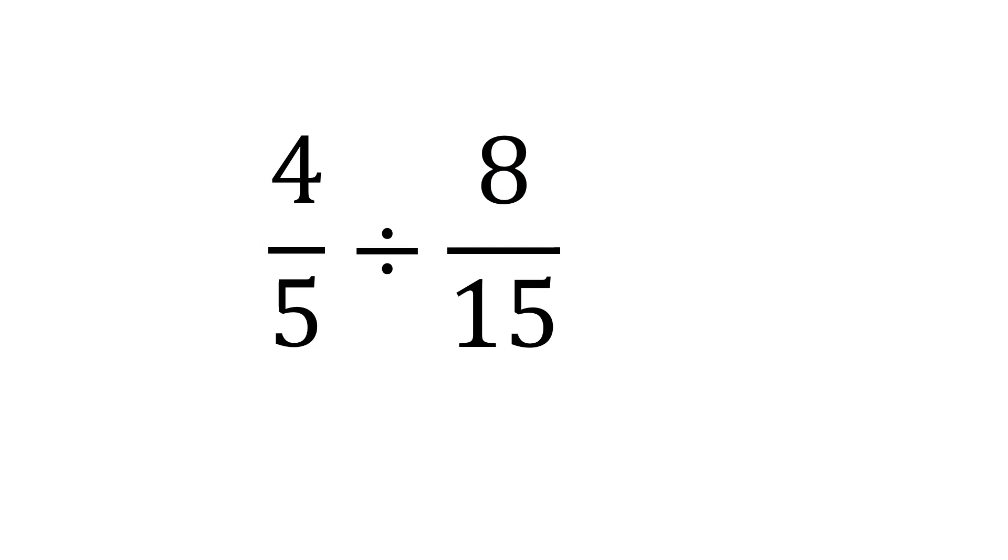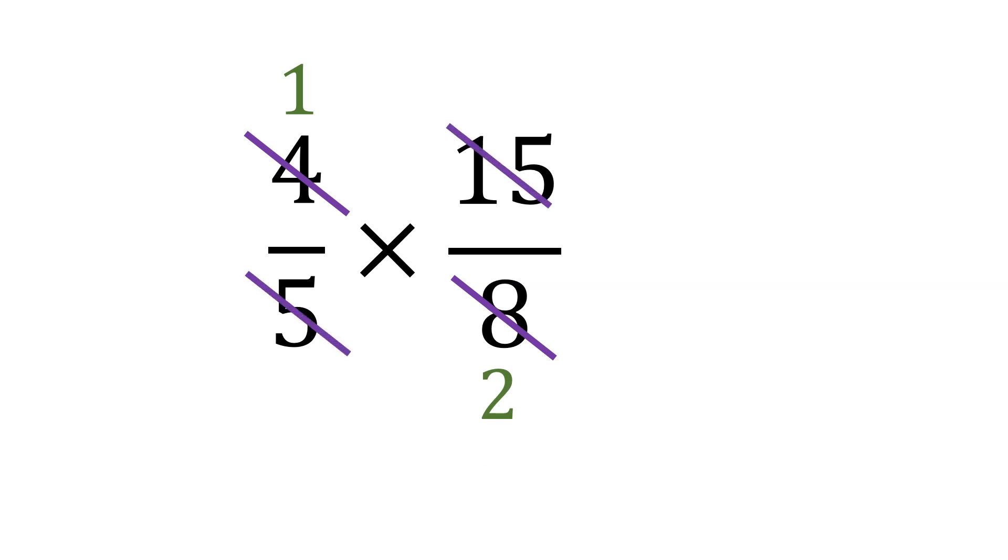We have 4 fifths divided by 8 fifteenths. We keep, change, invert. Then, do cross cancellation. 4 and 8 are both divisible by 4, so 4 divided by 4 is 1 and 8 divided by 4 is 2. The same with 5 and 15. They are both divisible by 5. 5 divided by 5 is 1, 15 divided by 5 is 3.